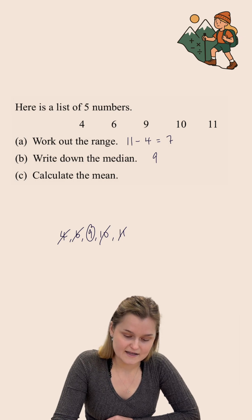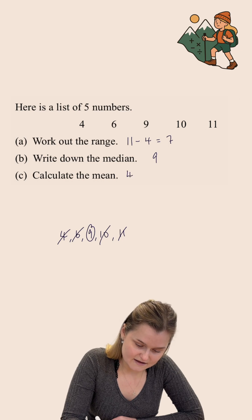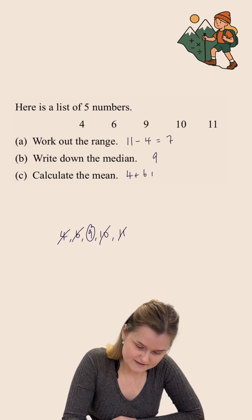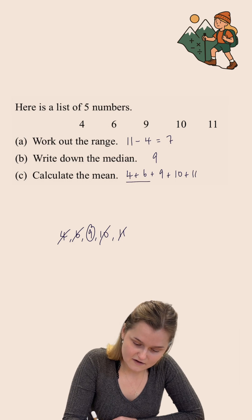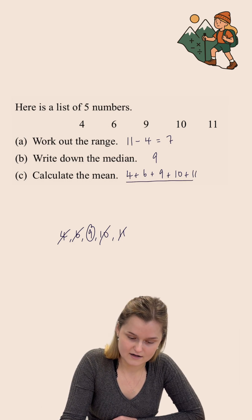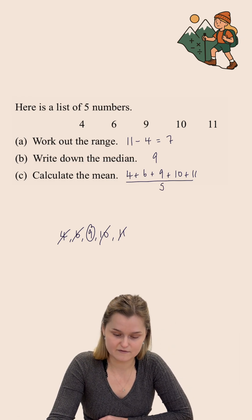Now we want to calculate the mean. To calculate the mean of a set of numbers, you add the numbers together, so I'm going to do 4 add 6 add 9 add 10 add 11, and then you divide that by how many numbers there are. In this case there are five numbers, and so I'm going to divide it by 5.